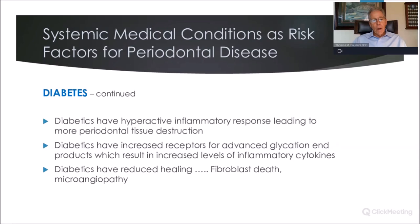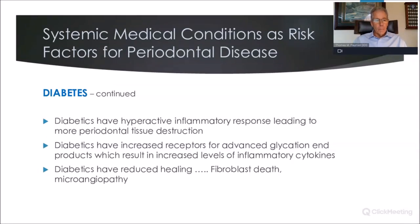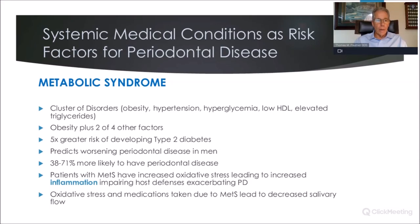Diabetics have hyperactive inflammatory responses: those circulating cytokines get into the oral cavity and can cause more tissue destruction and bone destruction. There are also increased levels of inflammatory cytokines, reduced healing, microangiopathy, and fibroblast death — so we're not going to get as good a connective tissue response when doing periodontal treatment if the patient is diabetic. We have to be aware of that when predicting appropriate treatment for a patient who has both diabetes and periodontal disease.